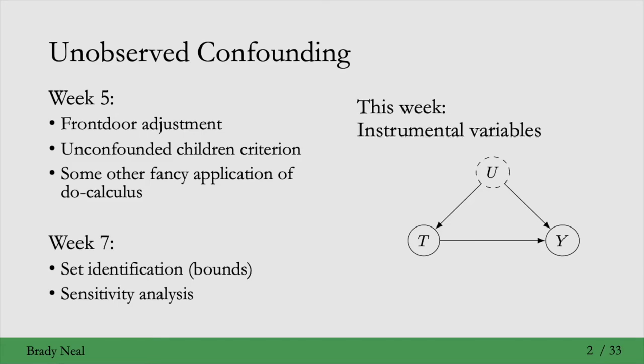And instrumental variables are another technique for addressing unobserved confounding. That's what we'll see in this lecture. This is the general structure to have in mind for an instrumental variable Z here. The intuition is that Z will cause some changes in T, which will then translate to some changes in Y. And the hope is that we'll hopefully be able to identify some causal effect using that variation in T that's specific to Z, that's not dependent on U.